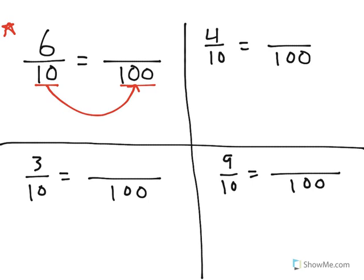Using what I know about math facts, I know that 10 times 10 is equal to 100. So to make sure that my fraction is equal, I need to multiply the numerator by the same thing. 6 times 10 is equal to 60, so 6 tenths is 60 one hundredths.